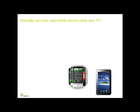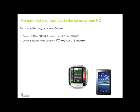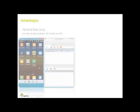In this 3-minute video, we'll present CTest Manual, a test tool for manual testers. CTest Manual enables manual testers to test any mobile device — specifically, connect any iOS or Android device to the PC using USB or Wi-Fi, and control it via the PC keyboard and mouse. Automatically, a report is generated for every step, including screenshots.